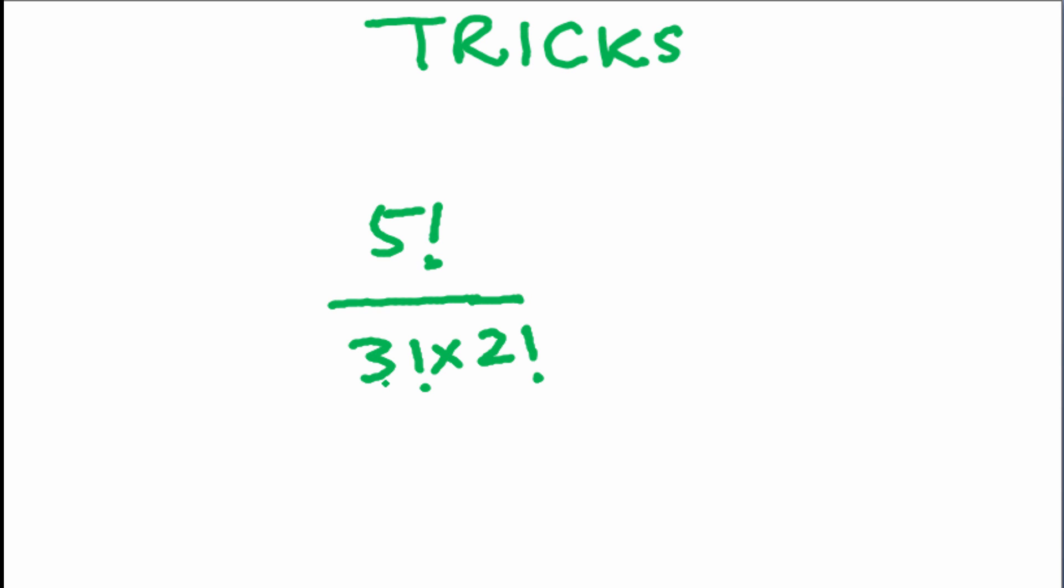That will give us 5×4×2 factorial. 2 factorial is 2×1. So, 5×4×2 will give us 10.